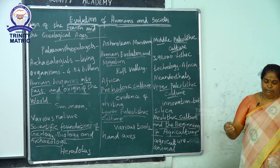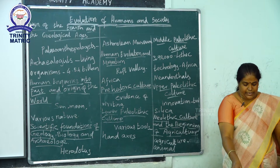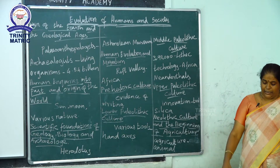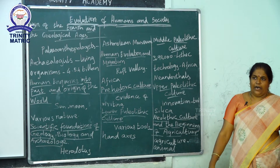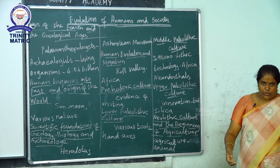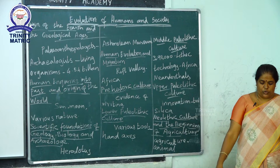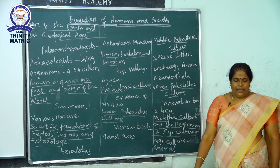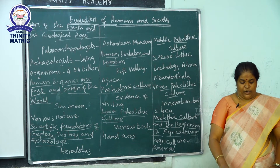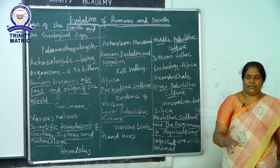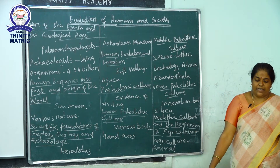Evidence for Iron Age agriculture is found at Mesolithic sites like Thoothukudi district and Adichanallur. Iron Age society used iron tools and weapons for hunting, food gathering, craft work, blacksmith work, and fortress construction. These people were very interested in hunting.